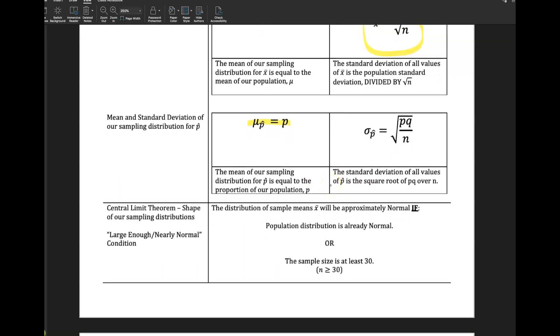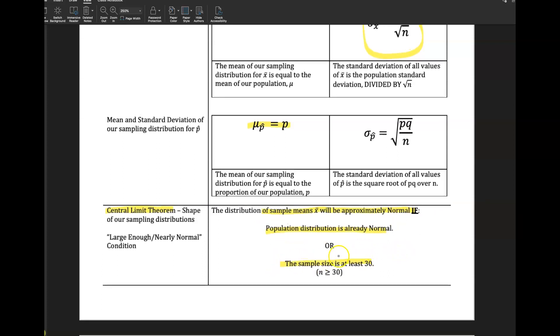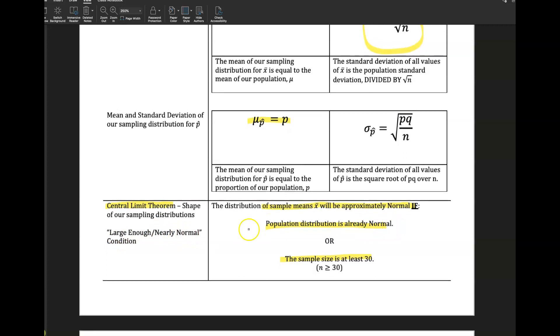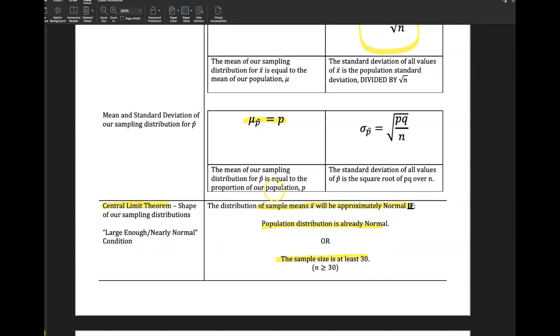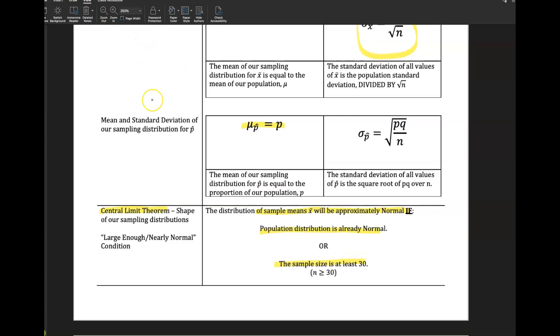And this leads us to the central limit theorem, right? The shape of all sampling distributions. That's what we're really considering with the central limit theorem here, is the distribution of all sample means will be approximately normal when we look at this distribution. If the population is normal, or our sample size is at least 30. And so that's important to know, right? That you need to be large enough or nearly normal condition for our sampling distribution to be normal. And we care about the distribution being normal because then we can do all our statistical analysis with empirical rules and normal distributions. That's why we want the data normal.